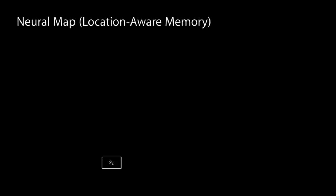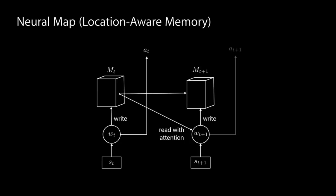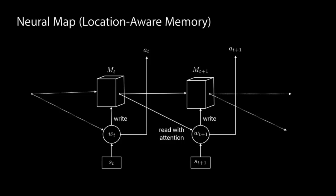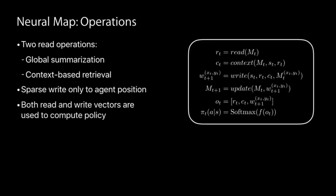The overall architecture: given some state, you create a feature, write it into memory, take an action, the environment changes, you read the necessary information from memory, update your memory, and take another action. The memory is a structured two-dimensional — in this case three-dimensional — block that you update at every time step. There are two read operations: global summarization and context-based retrieval. There is a sparse write operation, writing only at the specific agent location. Both representations are used to compute the policy.